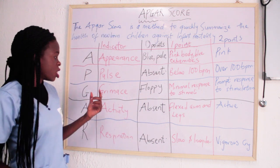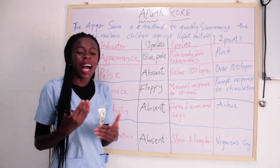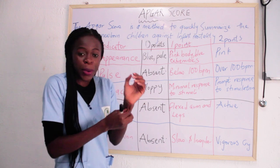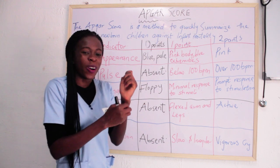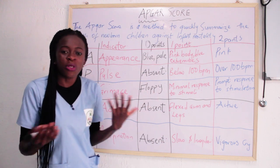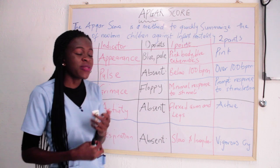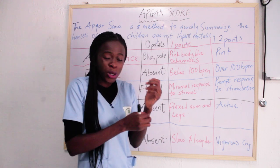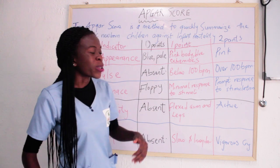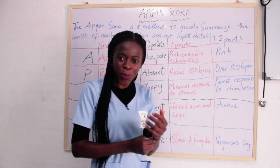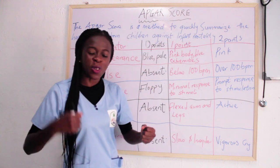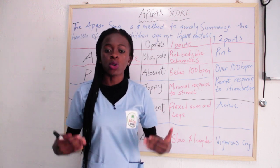The next component is G — Grimace. Grimace simply means how the baby responds to stimuli, such as a pinch. When the response is floppy and the baby is not even responding, you give the baby zero. If there is a minimal response — you pinch and the response is not strong — you give the baby one. But if there is a prompt response, the baby clearly reacts to being pinched and knows somebody pinched them, you give the baby two points.